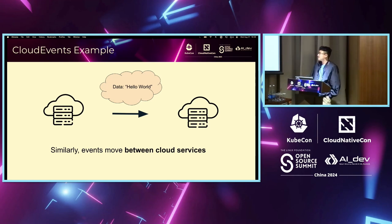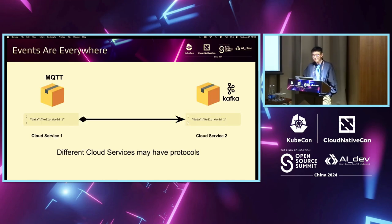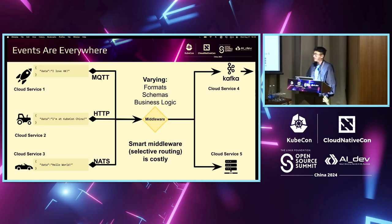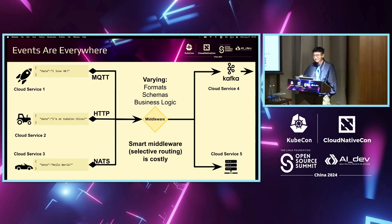This analogy applies to the cloud data workspace as well. Events can move between different cloud services. For example, if you wanted to send a message from Cloud Service 1 using MQTT to Cloud Service 2 using Kafka, you need middleware to help with translation between different protocols. What if there are even more services using MQTT, HTTP, Kafka, and others? We need the middleware to be really smart, handling different formats, different schemas, and different business logic — and having such a smart middleware is really costly.